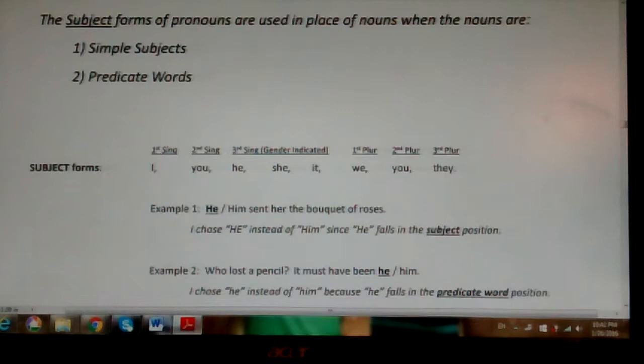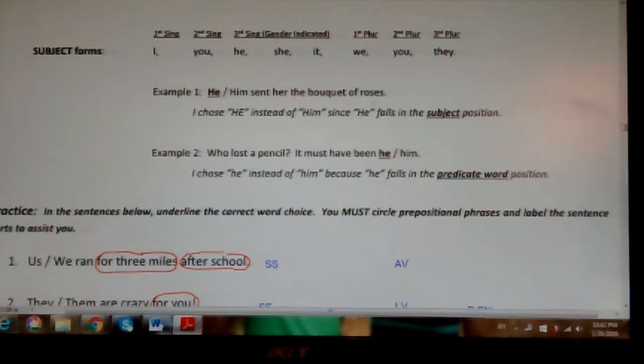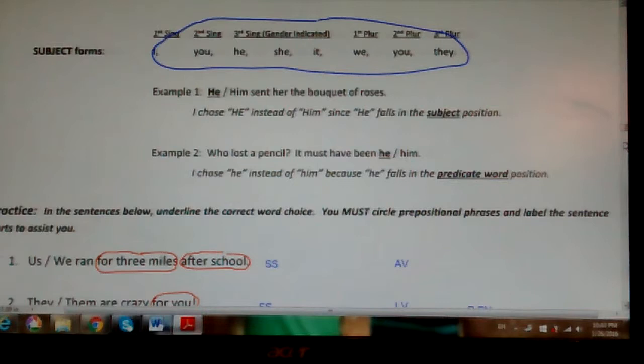And after a linking verb as a predicate word, predicate pronoun. So let's look at two examples. When I say he or him sent her the bouquet of roses, this sounds right and it is right. I chose he instead of him since he falls in the subject position: he, simple subject, action verb sent, and then roses would be the direct object and her would be the indirect object. Next example, this shows us the other situation where I use subject forms right up here, all my subject forms in place of a predicate word.